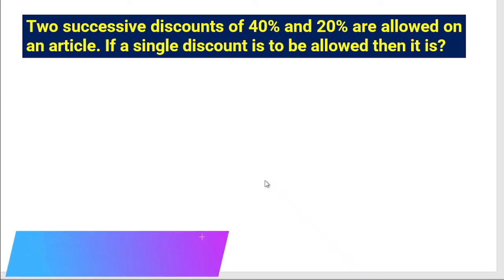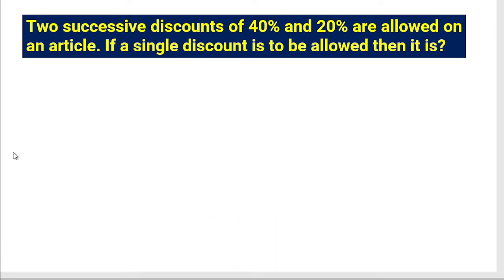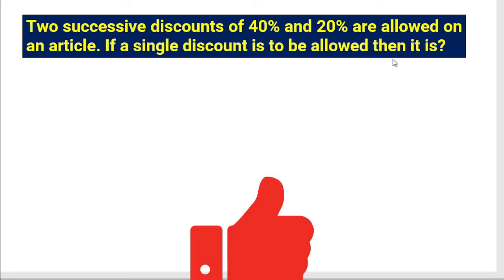Welcome to the Varia Classes. Today in this video we'll solve a couple of problems related to profit and loss. In the first question, two consecutive discounts of 40 percent and 20 percent are allowed on an article, and we need to find what single discount is to be allowed.